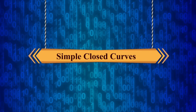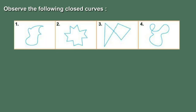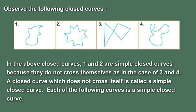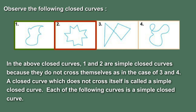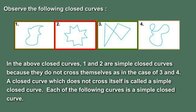Observe the following closed curves. In the above closed curves, one and two are simple closed curves because they do not cross themselves, as in the case of three and four.